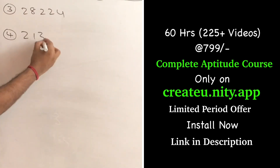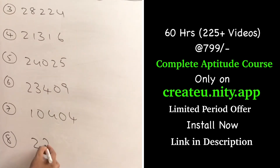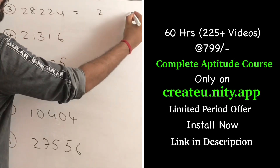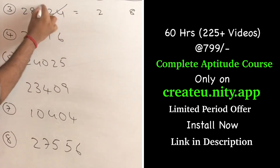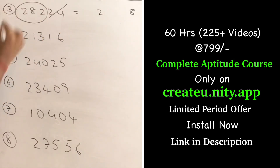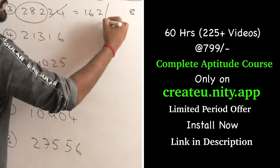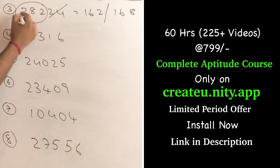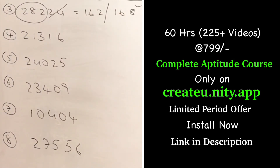Let us solve these 6 questions now and see whether we can answer very quickly. If the number ends with 4, it should be either 2 square or 8 square, so my answer should end with 2 or 8. I have eliminated 2 numbers. The leftover is 282, which is more than 16 square, so it should be 162 or 168. Is 282 close to 16 square or 17 square? 282 is close to 17 square, so my answer will be 168.